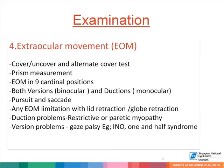Examination of the extraocular movements must begin with a cover-uncover test as well as an alternate cover test. This helps to pick up subtle abnormalities that may not be visible in examination of extraocular movements per se. If a tropia or phoria is detected on the cover-uncover test, this might be measured with prisms. Subsequently, examine the extraocular movements in nine cardinal positions of gaze — both versions, which is binocular, and ductions, which is monocular — must be assessed.